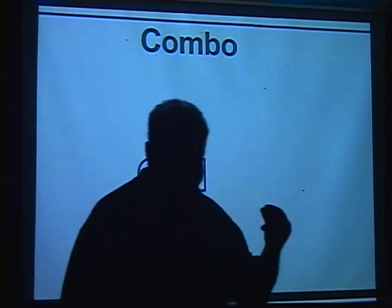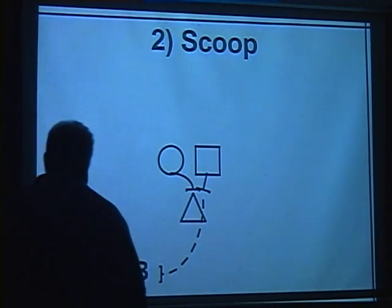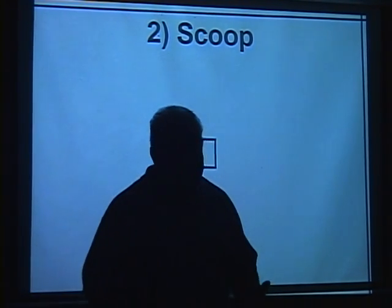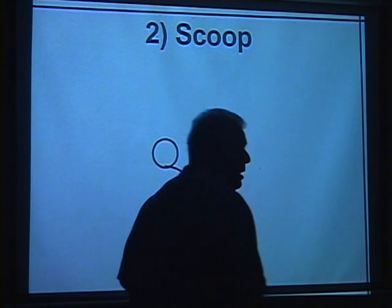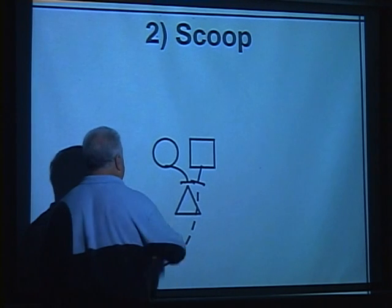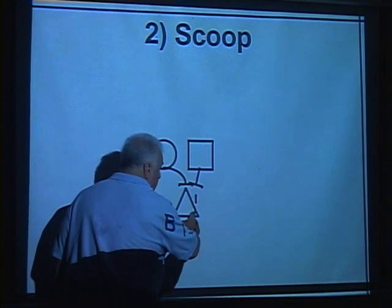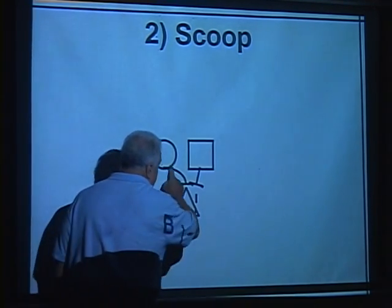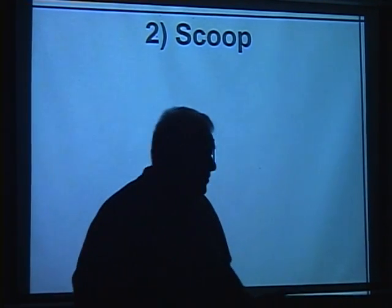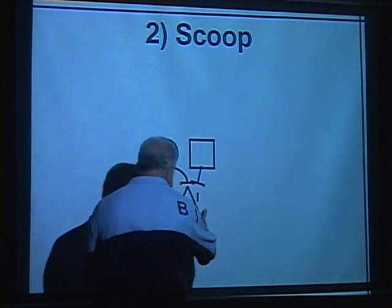Then the linebacker takes the combo off us. Now, stop it right there. For a term — just our term — we call this a scoop. When the center, guard, tackle, or tight end work in combination and this guy works through me to get to the second level, and this guy catches me — we refer to that as scoop. The word is just our word; it could be 'ham sandwich.' It's our word for this particular procedure by the offense.